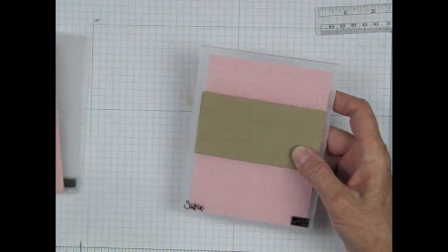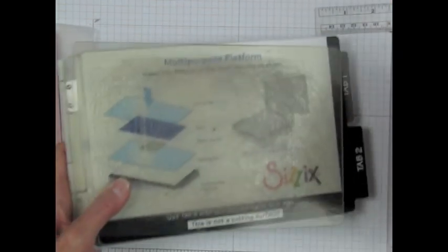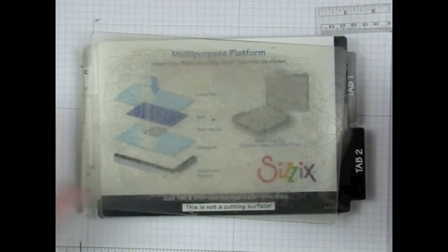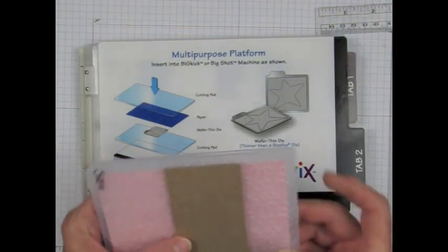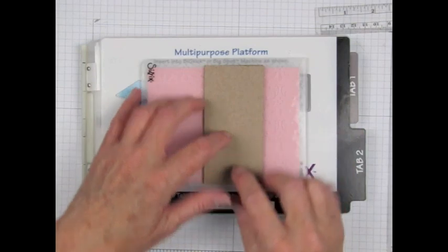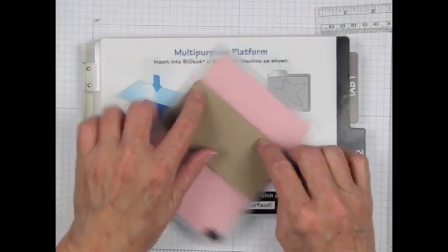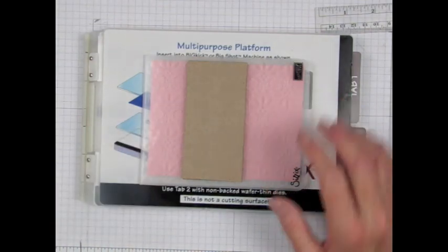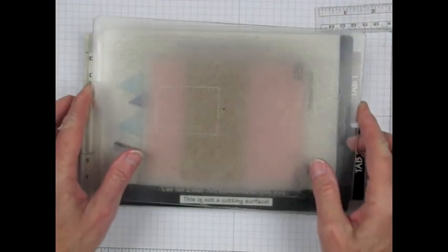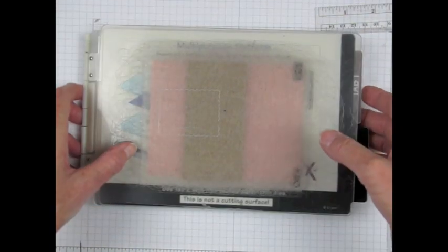The next thing I'm going to do is take my multipurpose platform and I'm going to put the embossing folder directly on the platform without a cutting pad underneath it. Then I take and put a cutting pad on top and I'll run this through the Big Shot.